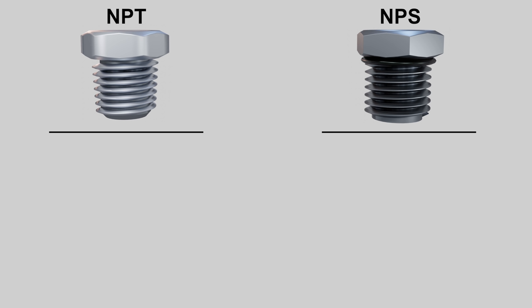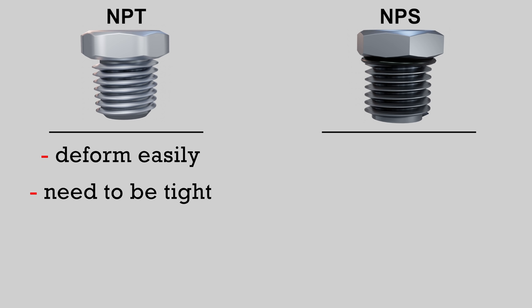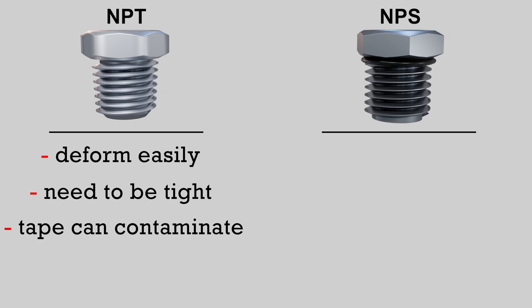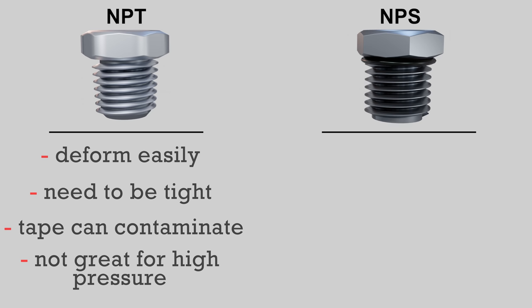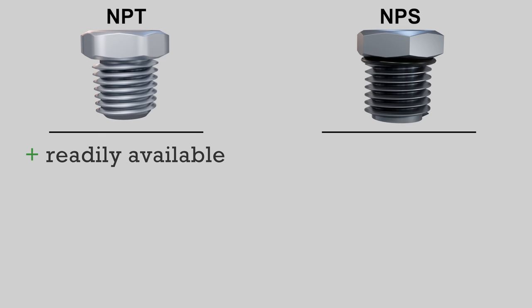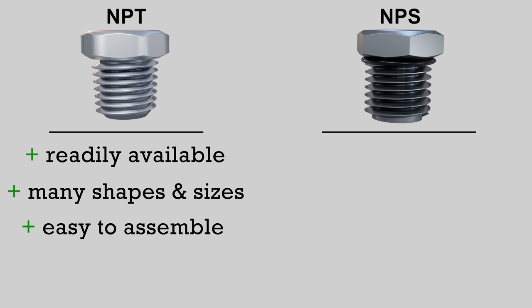So what are the pros and cons for both? Tapered threads don't react well to frequent assembly and disassembly, as each time the threads deform ever so slightly, which would eventually cause leaks. The fact that they need to be tightened a lot makes them more prone to cracking. The lubricant used on the threads, such as PTFE tape or pipe dope, could easily contaminate a system, which is why tape isn't commonly used on gas systems. And they aren't the best for high pressure systems such as hydraulic systems. What is good about them is that they're readily available in stores, come in a large variety of shapes and sizes, and they're easy to assemble as there are no extra parts like on flared or compression connections.